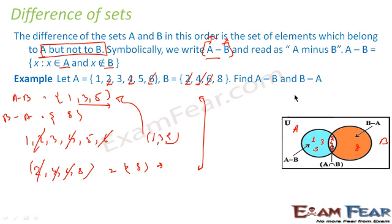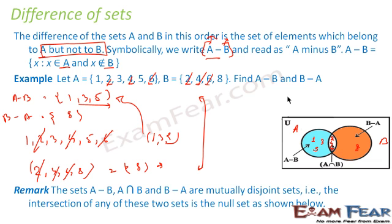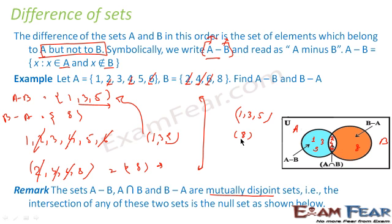The point to note is B minus A is not equal to A minus B. Also, whatever sets you get from A minus B and B minus A, they are mutually disjoint sets — there is no common element between them. So if you do A minus B intersection B minus A, you get the empty set (phi).